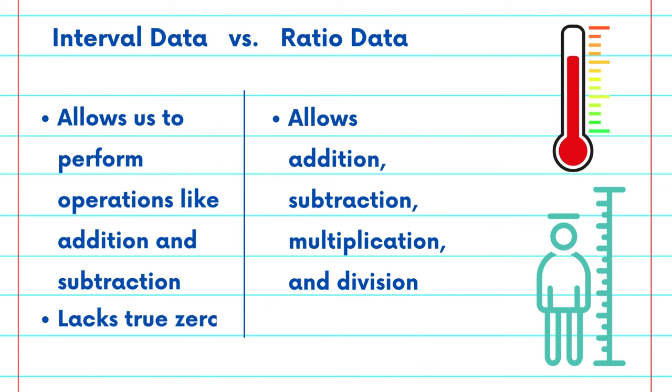So, in summary, interval data has consistent intervals but lacks a true zero point, while ratio data has both consistent intervals and a meaningful zero point.